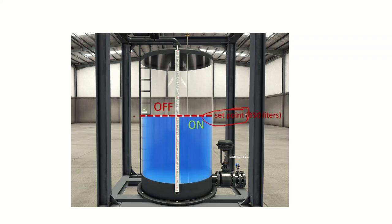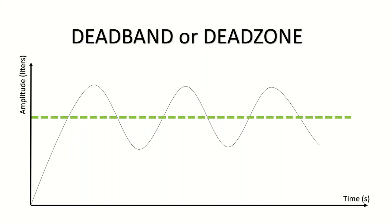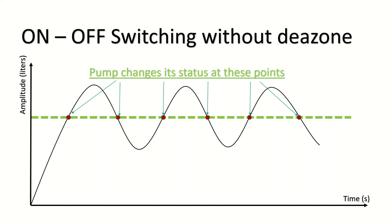To make sure that the level in the tank is always at 350 liters, we go to the graph. The graph shows the amplitude in liters and the time in seconds. The green line is the set point of 350 liters, and the red dots are the times when the pump changes its status.